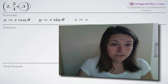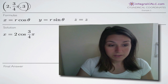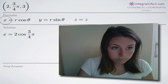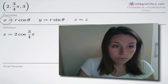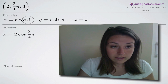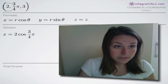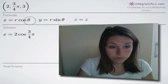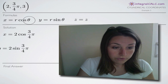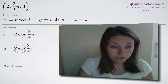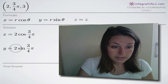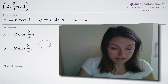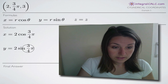Once we know that, all we have to do is plug in those numbers to get the formulas we need to convert. To find the x coordinate, we use r cosine theta, plugging in 2 for r and 3π over 4 for theta. We also get y equals 2 sine of 3π over 4, plugging in 2 for r and 3π over 4 for theta.